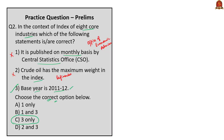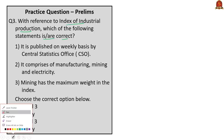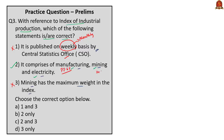Third question: With reference to the Index of Industrial Production, which statements are correct? Statement 1: it is published on a weekly basis by the Central Statistics Office. Statement 2: it comprises three major industries — manufacturing, mining, and electricity. Statement 3: mining has the maximum weightage. Statement 1 is wrong — IIP is a monthly publication, not weekly. Statement 2 is correct — IIP comprises mining, manufacturing, and electricity. Statement 3 is wrong — the manufacturing sector has the maximum weightage of 77.6%, compared to 14.3% for mining. The correct answer is option B, 2 only.